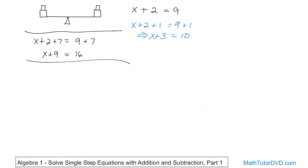You can also subtract anything you want from both sides. Starting from x plus 2 equals 9: subtract 1 from the left and subtract 1 from the right. On the left I get x plus 1, because 2 minus 1 is 1; on the right, 9 minus 1 is 8. So x plus 1 equals 8 represents the same thing as all the previous equations.